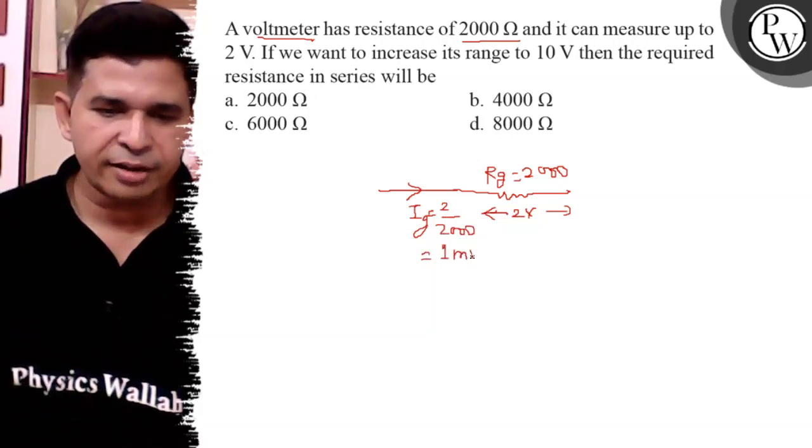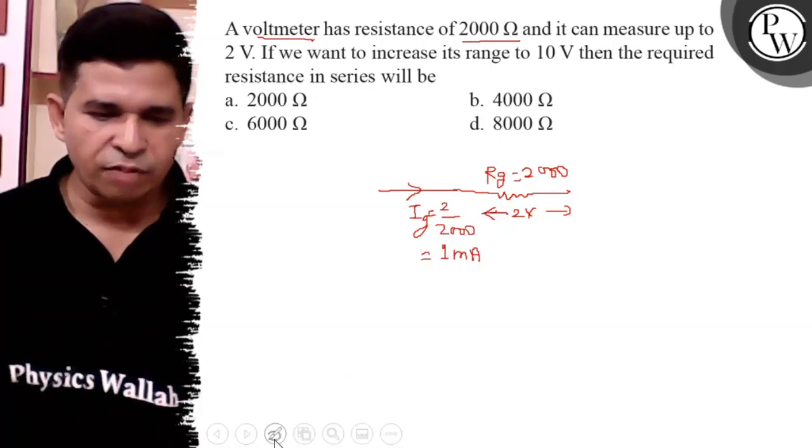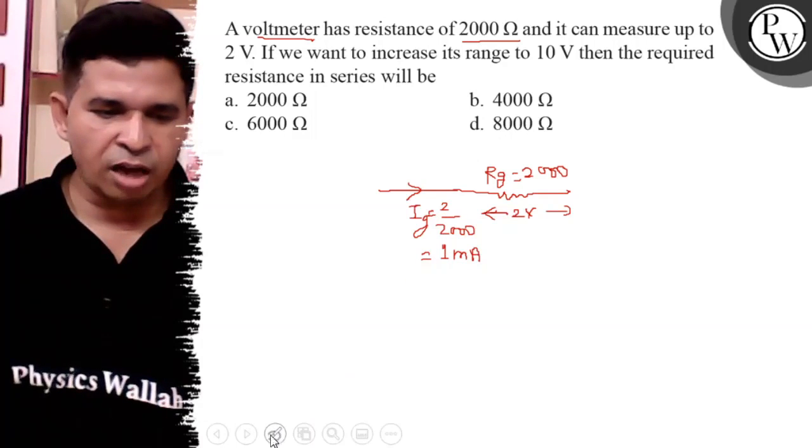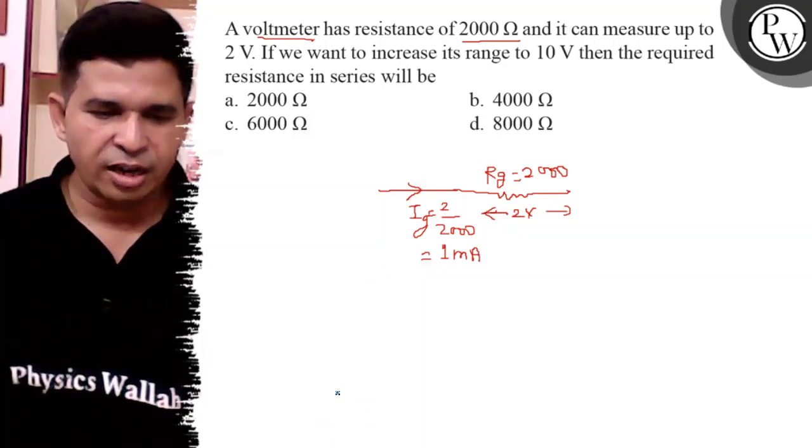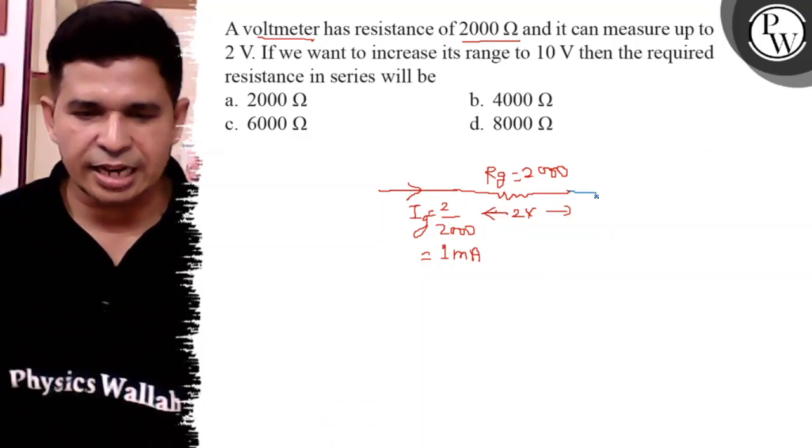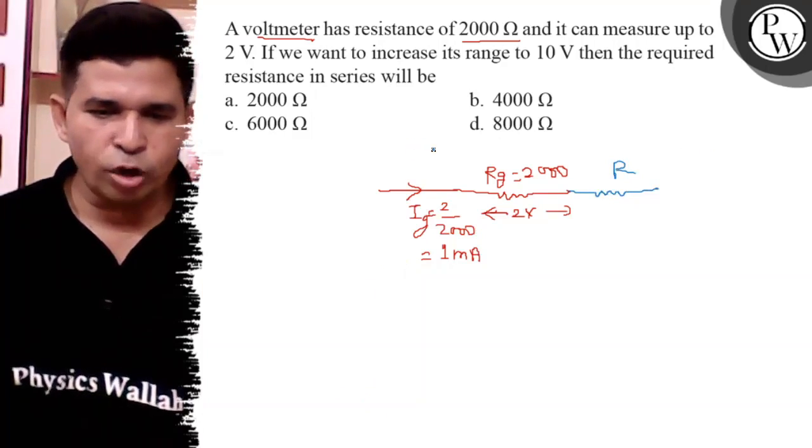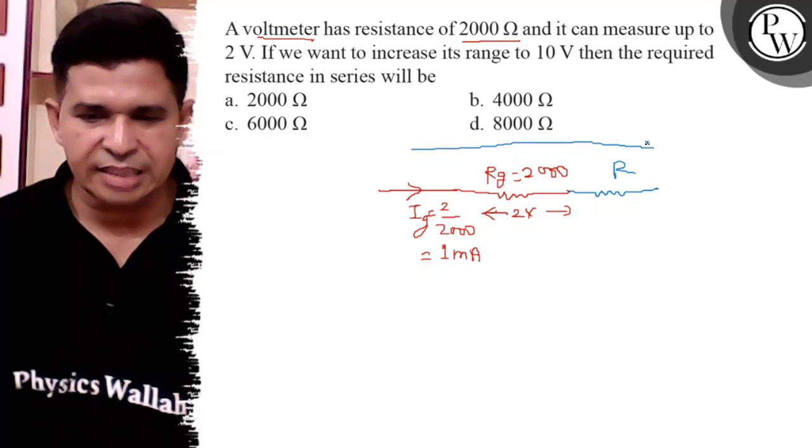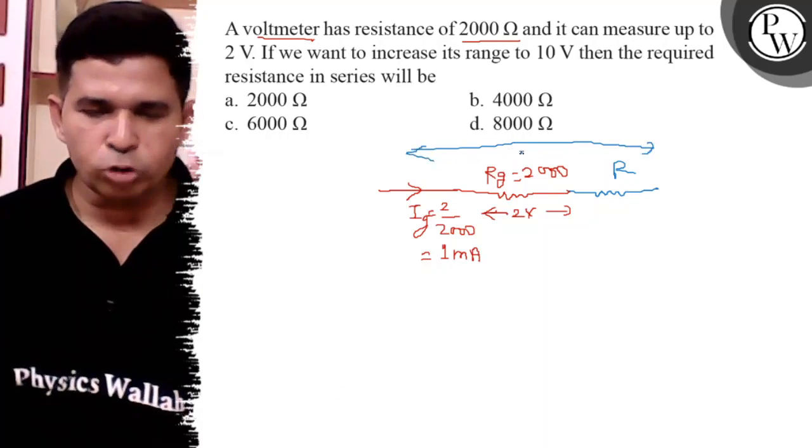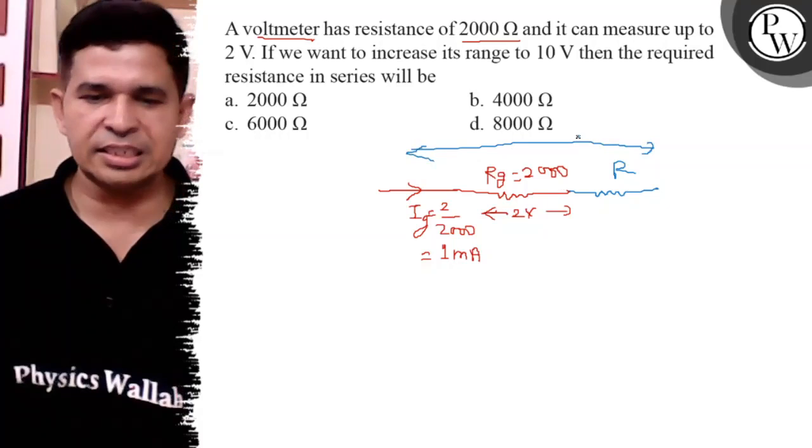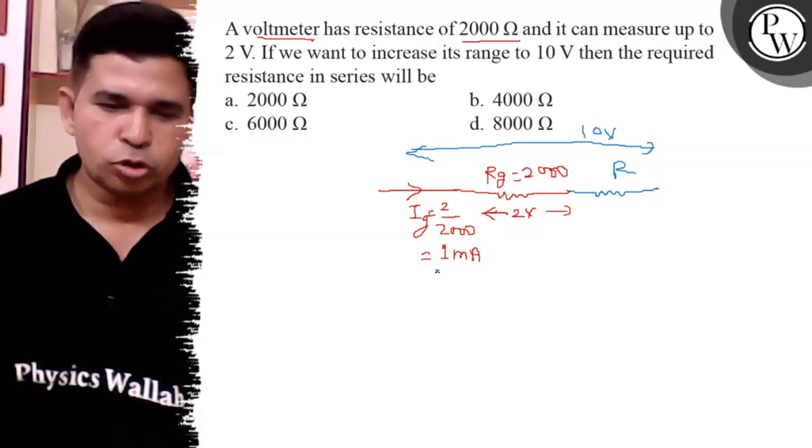Now to convert it to another range voltmeter, a series resistance is connected. Let it be r. Now its voltage range is increased, that is the drop on both resistances, that is 10 volt.